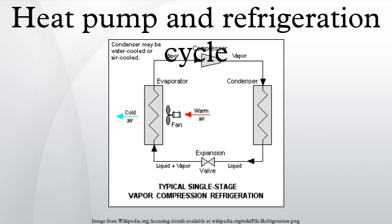the compressor is replaced by an absorber which dissolves the refrigerant in a suitable liquid, a liquid pump which raises the pressure, and a generator which, on heat addition, drives off the refrigerant vapor from the high-pressure liquid.